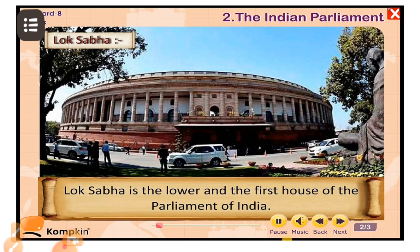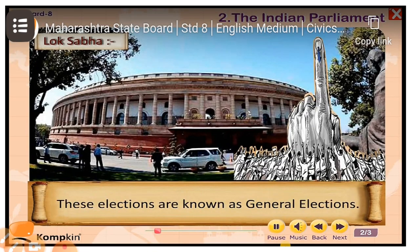The members of Lok Sabha are elected directly by the people from the territorial constituencies. The tenure of Lok Sabha is 5 years, meaning the working period of the Lok Sabha is 5 years. The elections take place after every 5 years and are also known as general elections.